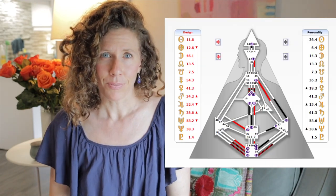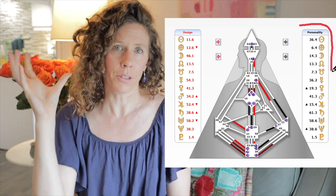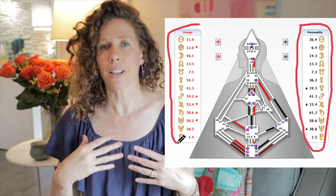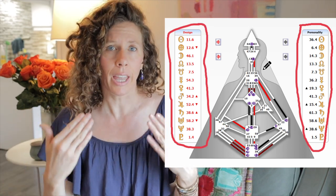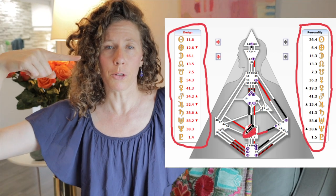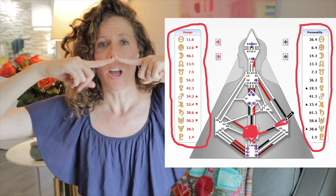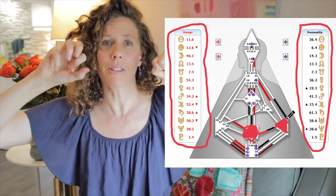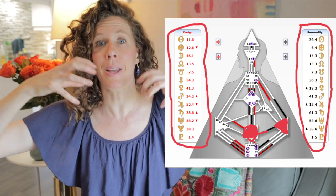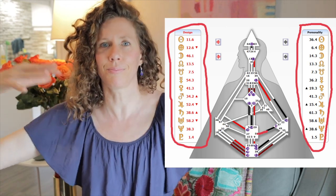When you look at a reflector chart, you'll see that there are no defined centers. Just like everybody else, there are 13 gates activated on your conscious side and 13 gates activated on your unconscious side. However, in the case of the reflector, there's no spot where those two gates link up and form a channel. When there is a channel that forms, the centers on either side become defined, and that's what makes one a manifester, projector, or generator. Because you don't have any centers defined, that's what makes you a reflector.